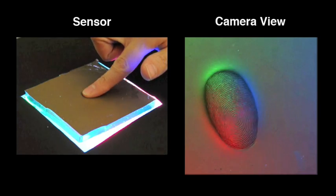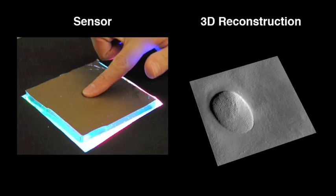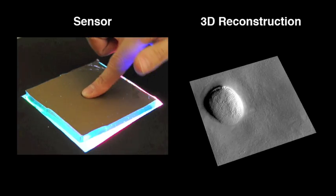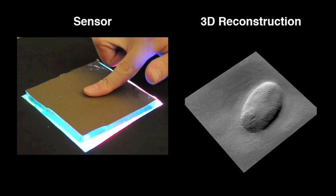Here, a user is interacting with the sensor. Here is a 3D reconstruction rendered with directional lighting. Since we have captured 3D, we can dynamically change the viewpoint.